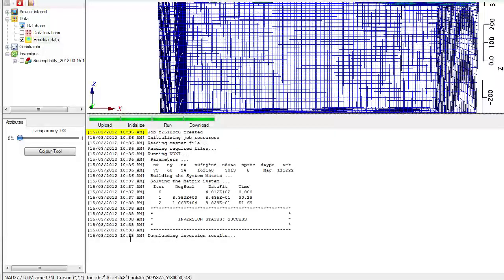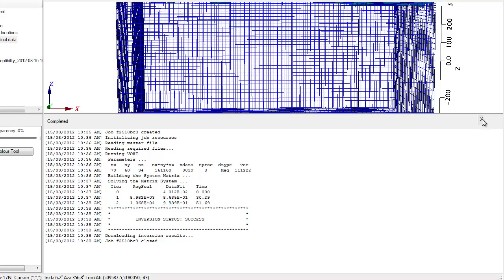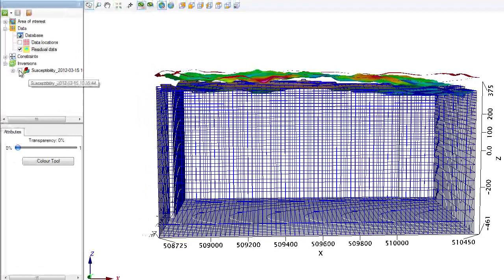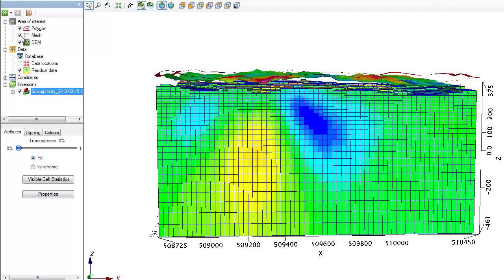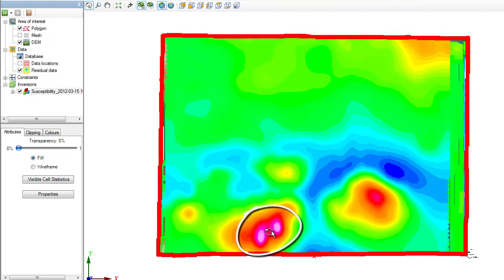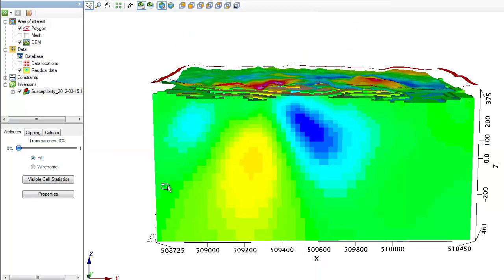Great, the inversion is done. It started at 1035 and ended at 1038. Three minutes to run an inversion for a voxel model with 161,000 points. I can close the progress log, turn on the susceptibility model. Let's turn off the mesh to better see the results. Note that we were specifically interested in this anomaly right here that had a concurrent mag and gravity response.